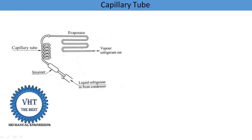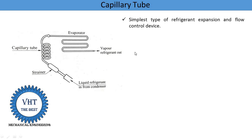The capillary tube is installed between the condenser and evaporator, and it is used to reduce the pressure of the refrigerant from condenser pressure to evaporator pressure. The liquid refrigerant coming from the condenser is supplied inside the capillary tube, where pressure is reduced. After pressure reduction, it is supplied into the evaporator.